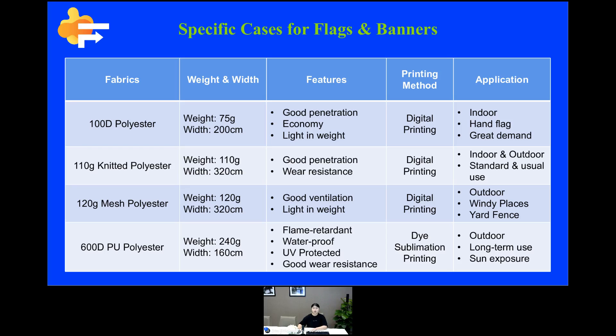The next one is 120 grams mesh polyester. You can tell from its name that the fabric has mesh — named with a feature, as we talked about. Based on its fabric feature, it has good ventilation and is therefore suitable for windy places. It's also a common fabric for fan banners. So if you have similar needs, go with it directly.